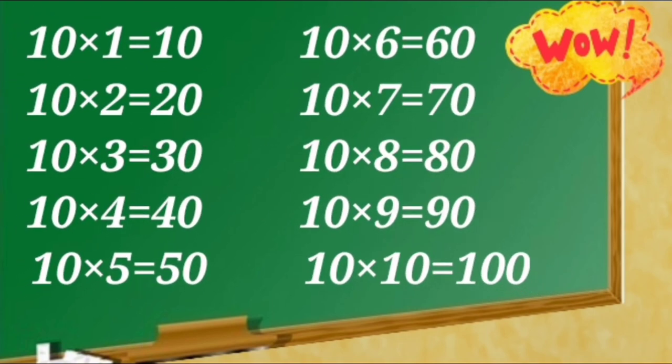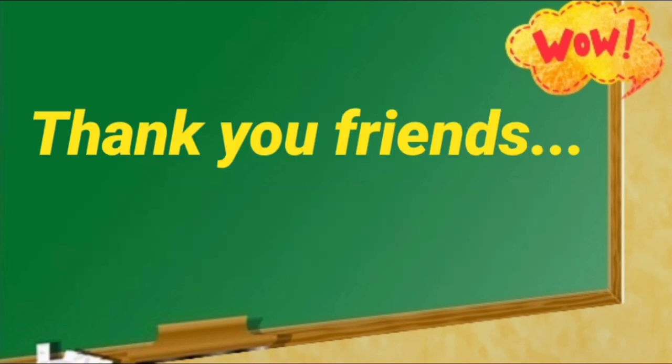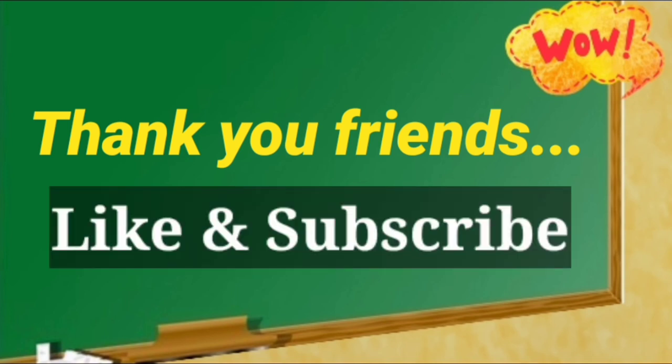10 ones are 10, 10 twos are 20, 10 threes are 30, 10 fours are 40, 10 fives are 50, 10 sixes are 60, 10 sevens are 70, 10 eights are 80, 10 nines are 90, 10 tens are 100. Thank you friends for watching my video. Bye Bye Friends!